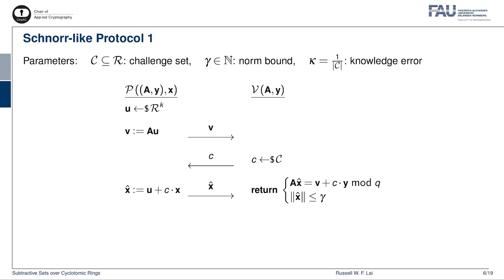Our first example is the lattice analogue of the textbook Schnorr protocol for proving discrete logarithm. In this protocol, the prover first samples a short vector u and computes the vector v, which is equal to A times u, and sends v over to the verifier. In turn, the verifier samples a challenge C from the challenge set C and sends C to the prover. Finally, the prover computes the vector x hat, which is equal to u plus c times x, and the verifier checks that x hat is computed correctly. A point to note is that the knowledge error kappa is inversely proportional to the size of the challenge set. Therefore, to achieve inverse polynomial knowledge error, we need to instantiate this protocol with a polynomial-sized challenge set.